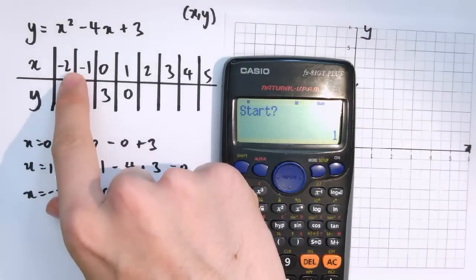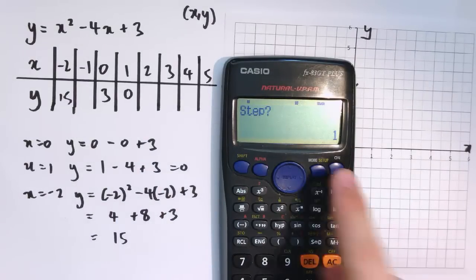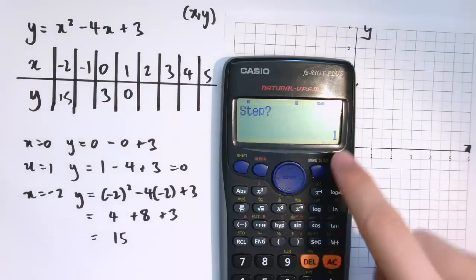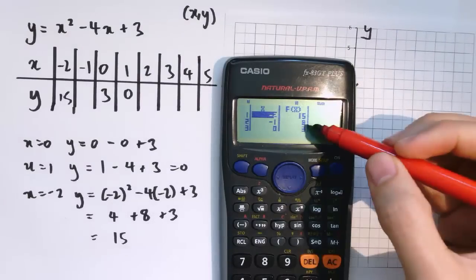If I wanted to start at minus 2, I'm going to go up to 5, using equals for enter, and the step is 1. The step is the difference between each successive point, so I'm going up in 1s here, so that's the step.